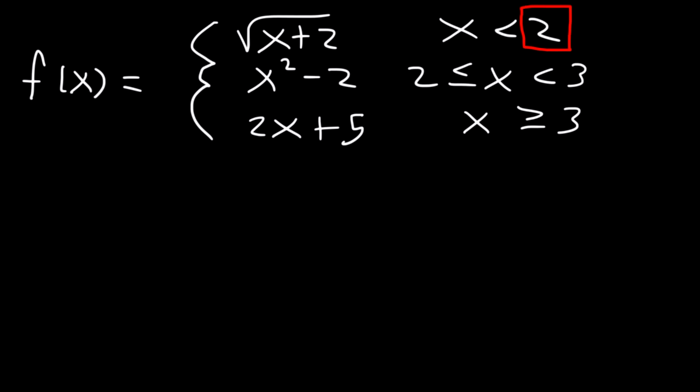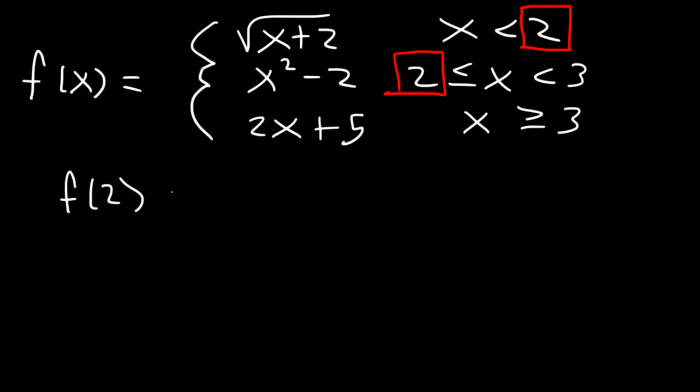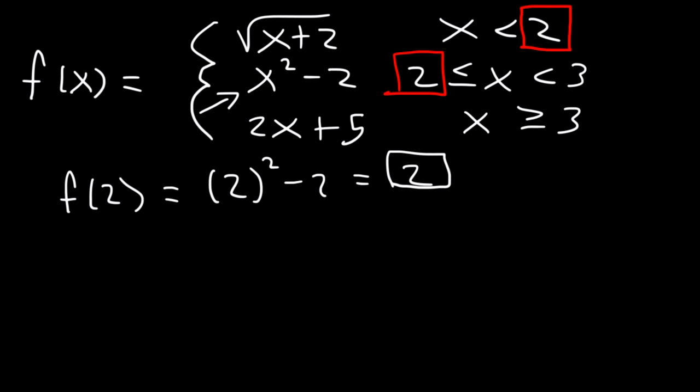Let's start with x equals 2. To find f of 2, we use the second function because x is greater than or equal to 2. That's 2 squared minus 2, which is 4 minus 2, so f of 2 equals 2. So f of a is defined — that's step 1.